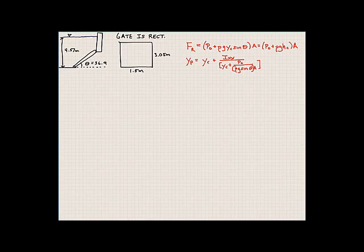So obviously we have some type of F, so this is F_R, and we also want to know Y_P. So what's Y_P on this gate?